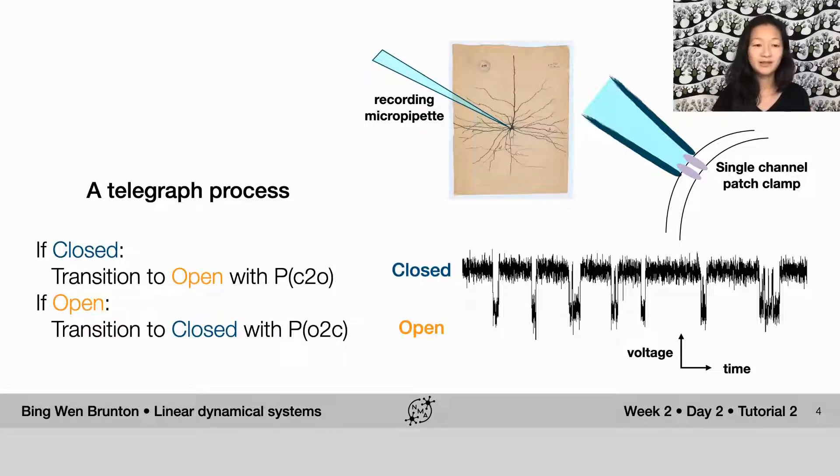And we specify the transitions among these states by two numbers. So if it's closed, it will transition to the open state with some probability specified by the probability of close to open. And if it's open, it's going to transition to closed with a probability of open to close. So two numbers specifies everything, probabilistically speaking.